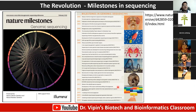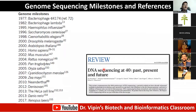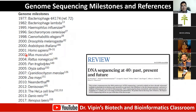Now we talk of milestones in sequencing. Nature came up with a special issue in February 2021 — a Nature milestone on genome sequencing, marking 20 years of the sequencing of the human genome. In 1977 the first virus was sequenced; in 1982 bacteriophage lambda was sequenced; Haemophilus influenzae was the first living organism sequenced in 1995. Then there is a gap until 2001, and since 2001 we have been sequencing extensively — virtually everything we know is now sequenced.